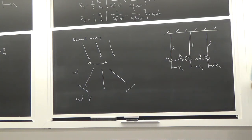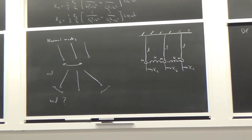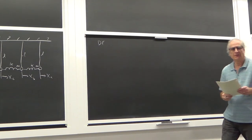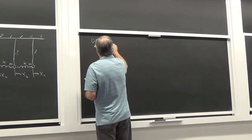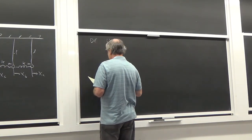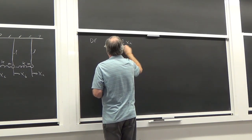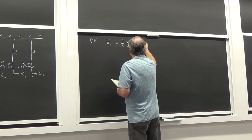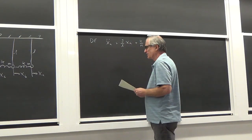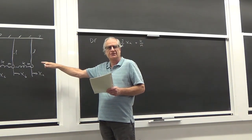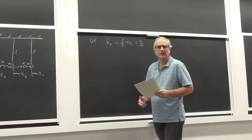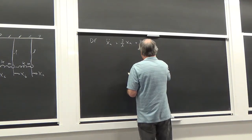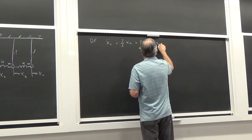Let's write down the differential equations. We've looked at the problem a bit and know what to expect. The equation for x_a: x_a double dot + (g/l) x_a, plus the contribution from the spring connecting a and b — without a driving force for now — gives: k/m · (x_a − x_b) = 0.